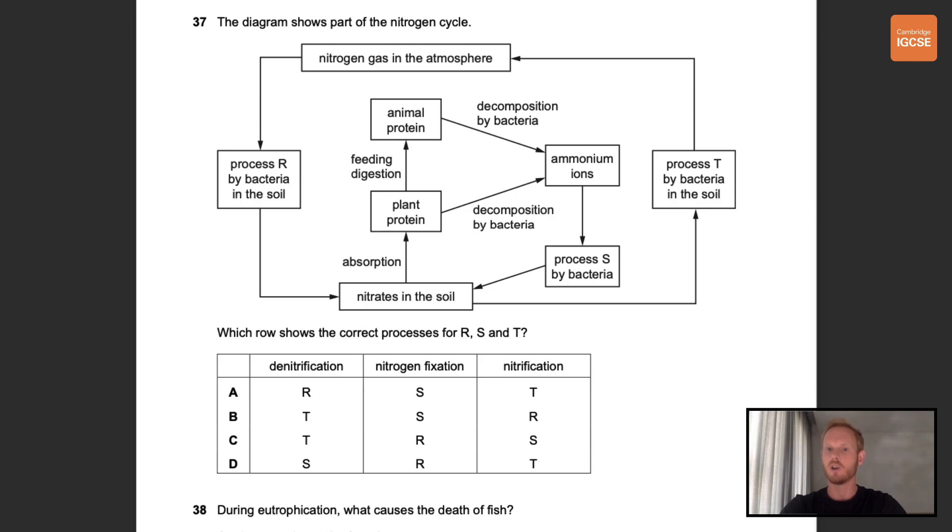Number 37. The diagram shows part of the nitrogen cycle. Which row shows the correct processes for R, S, and T? Okay, so process R involves the conversion of nitrogen gas in the atmosphere to nitrates in the soil by bacteria. This is referred to as nitrogen fixation. Process S is nitrification. That's the conversion of ammonium ions in the soil to nitrates that can be used by plants. Finally T is the process by which bacteria in the soil convert nitrates to atmospheric nitrogen gas and this is called denitrification. The correct answer is therefore C.